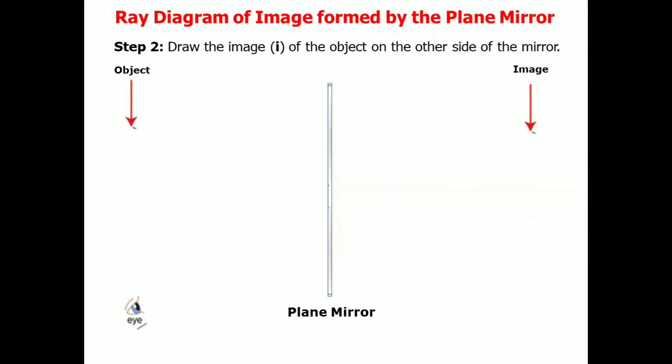Let's proceed to step number three. Draw the light rays from the image to the eyes. From the image to the eyes. So, this is how we do it.